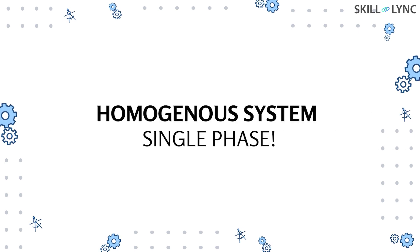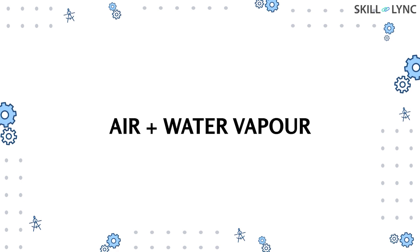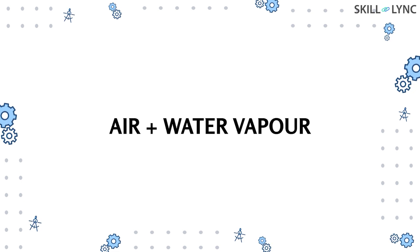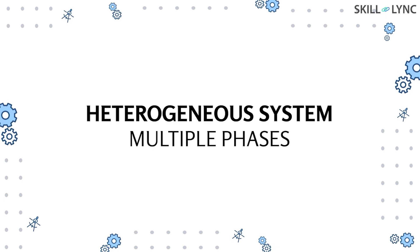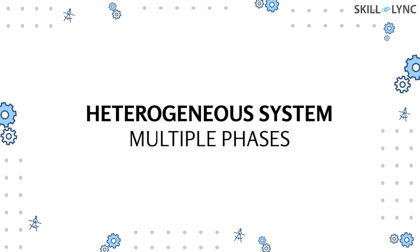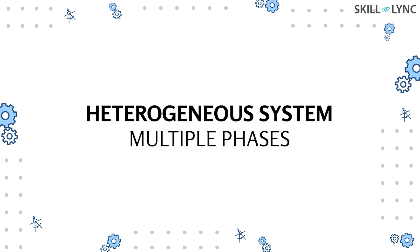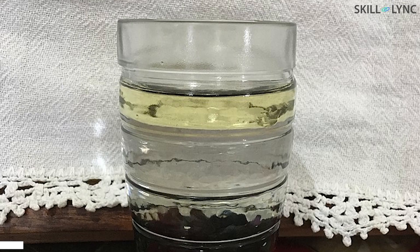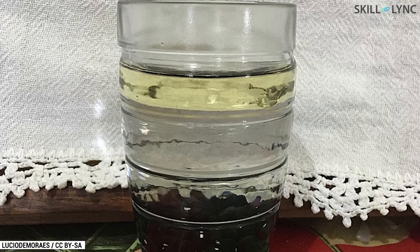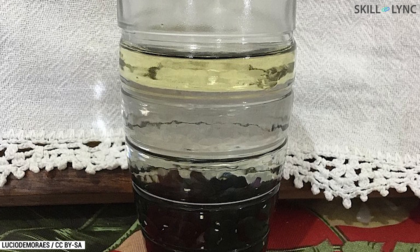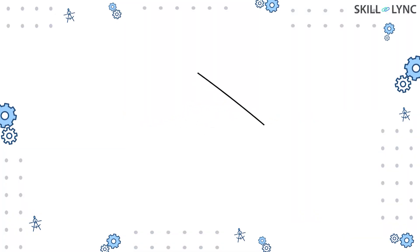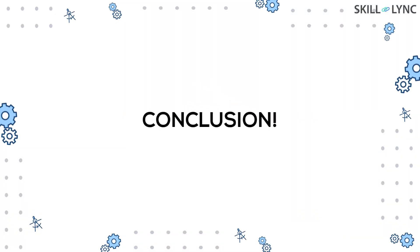A homogeneous system is a system which consists of particles in a single phase. A mixture of air and water vapor is the most common example of such a system. On the other hand, a heterogeneous system is one which contains particles under two or more phases. An example of such a system is the mixture of water and oil.